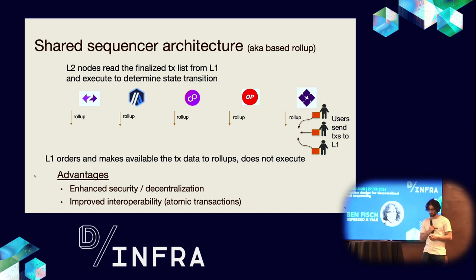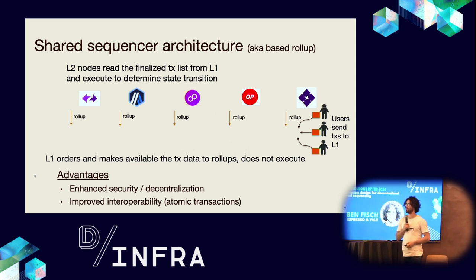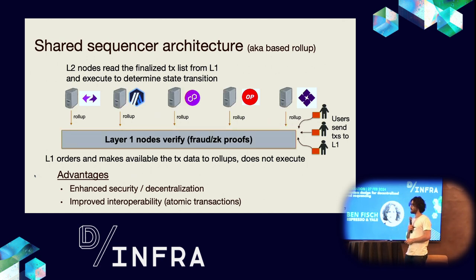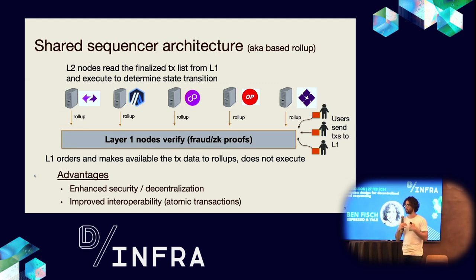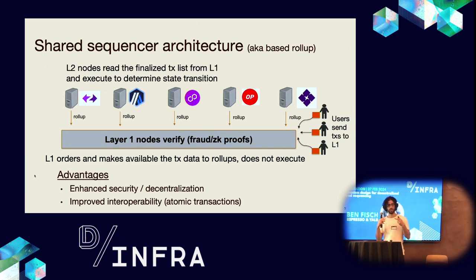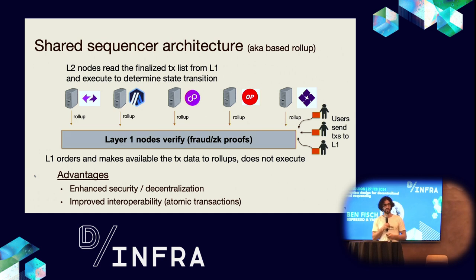A shared sequencer architecture, also known as a base rollup architecture, is where L2 nodes read the finalized transaction list from the L1 and execute to determine the state transitions. This was actually the initial design of rollups before sequencers were introduced for efficiency reasons. The L1 handles all ordering and availability of transaction data. The advantages are enhanced security, decentralization, and improved interoperability — because the same proposer for an individual slot simultaneously constructs the L1 block and all rollup blocks.